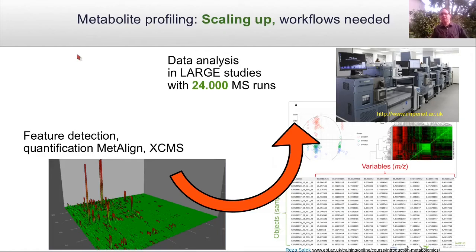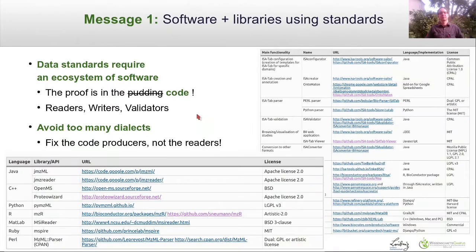Data standards are required because metabolomics is really scaling up to massive amounts of samples. We need workflows, and those workflows need standardized formats to process them. The first message in the paper is to use common software and libraries for the standards, because all data standards require an ecosystem of readers, writers, and validators. You can write all the standards you want, but if there is no code using them, they won't be applied in the wild.